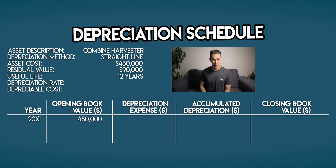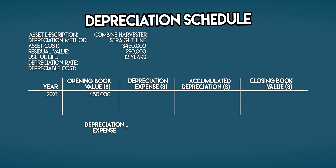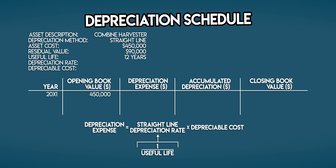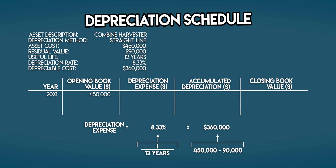Now let's work out your depreciation expense. Straight line depreciation is a fixed cost method where the expense is spread out evenly over the asset's useful life. The depreciation expense is calculated by taking your straight line depreciation rate and multiplying it by your depreciable cost. Your straight line depreciation rate is 1 divided by the useful life — so that's 1 over 12 years, which rounds to 8.33%. Depreciable cost is the difference between your asset cost and residual value: $450,000 minus $90,000 is $360,000. So 8.33% multiplied by $360,000 is $30,000 — your combine harvester's depreciation expense in year 1.